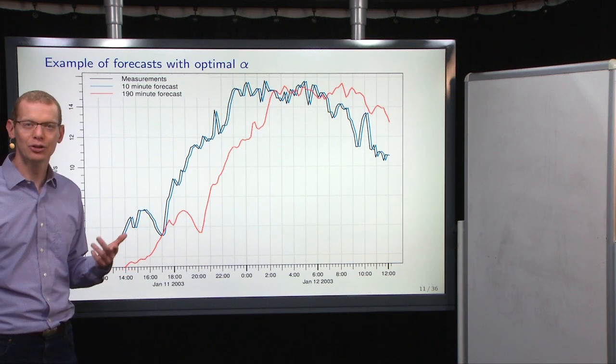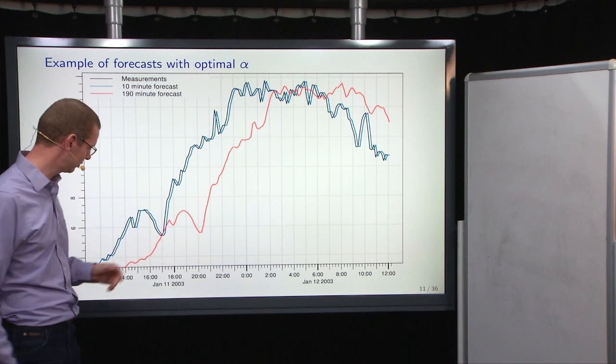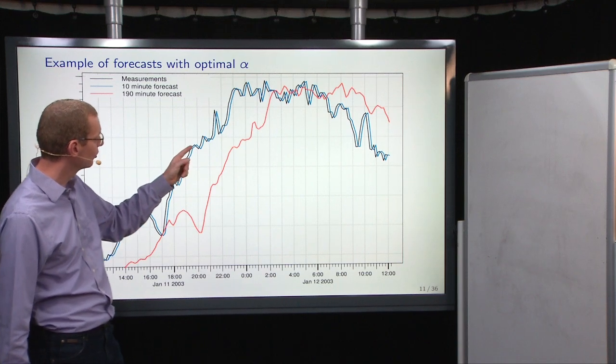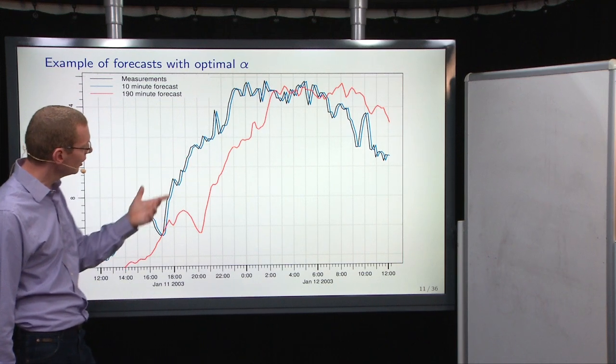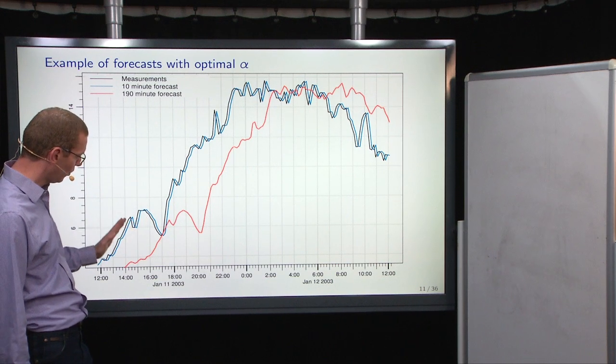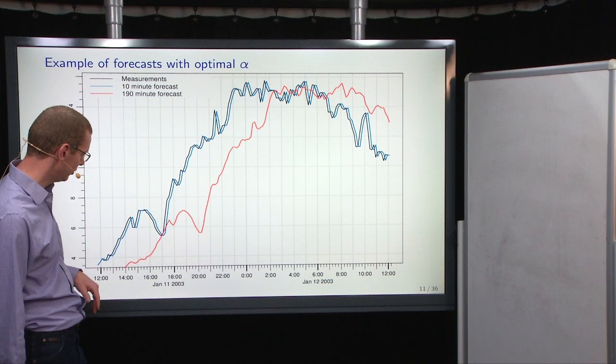That means we're actually using the most recent observation as our 10-minute prediction. So that is effectively what we expect to see. And they are very close, although not entirely the same, but it is pretty much just a shift. So the prediction one step ahead is effectively just the current value.